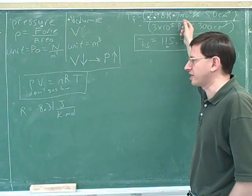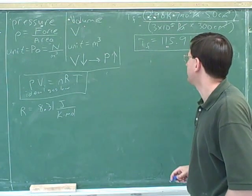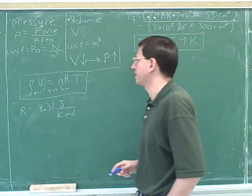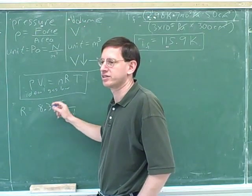Notice that when we did our two-situation problem, we didn't actually have to use R, because that wasn't one of the things that was changing. So that's why we didn't have to use SI units here except for the temperature. We could just use consistent units. But if you're doing a one-situation problem, you're going to use R, and you have to be consistent with your R. So that has to be in SI units.